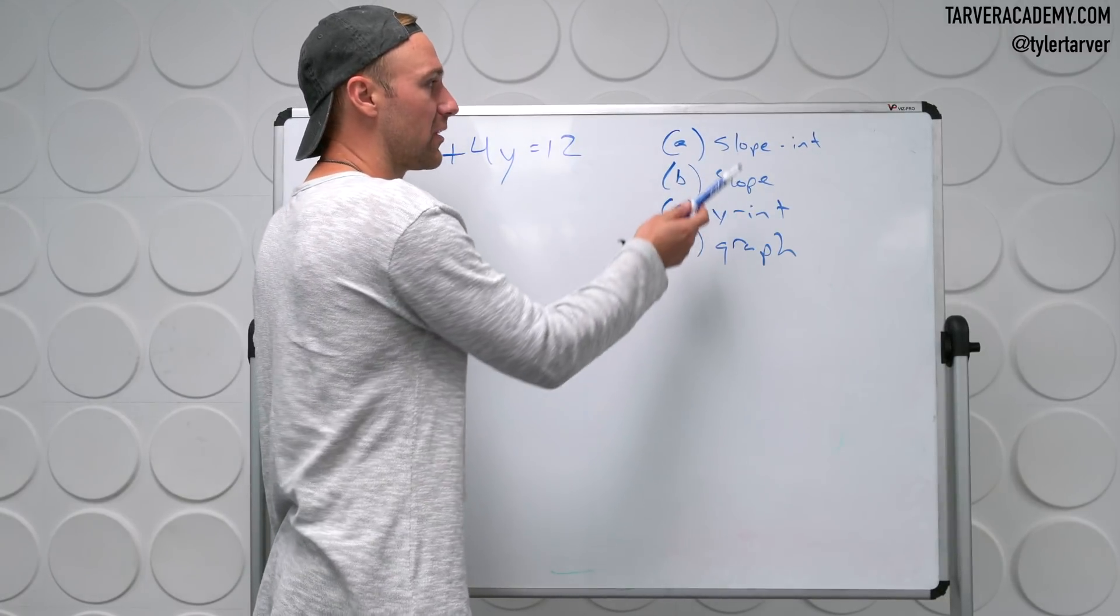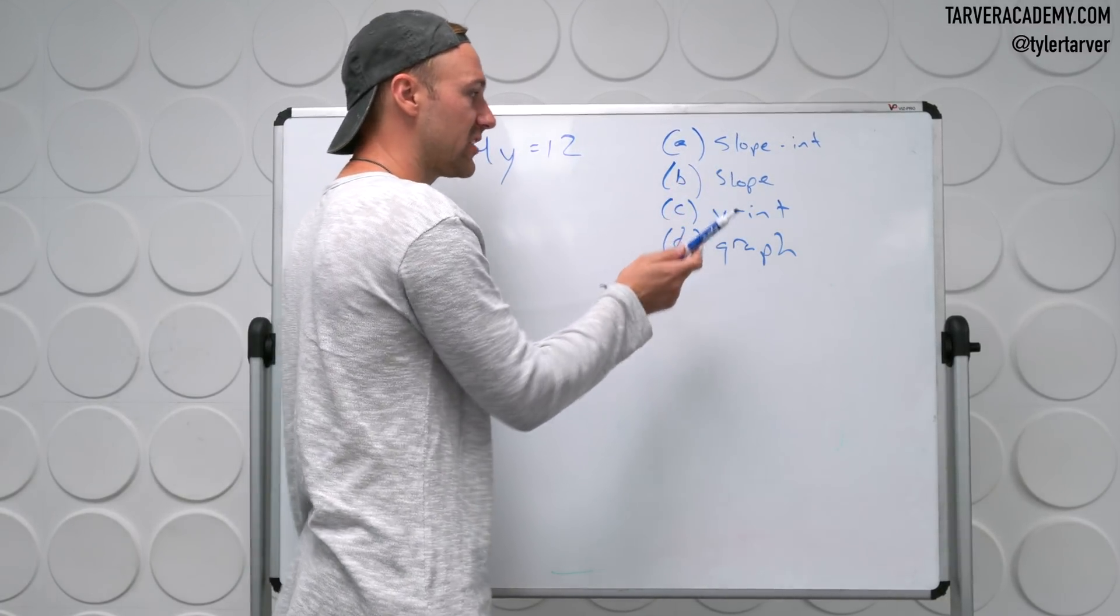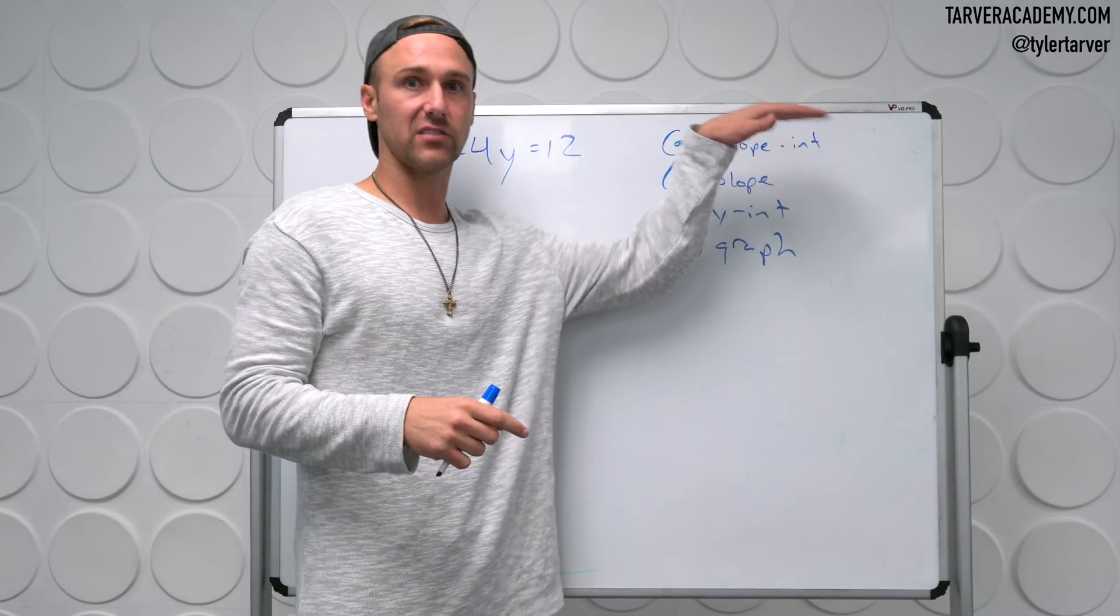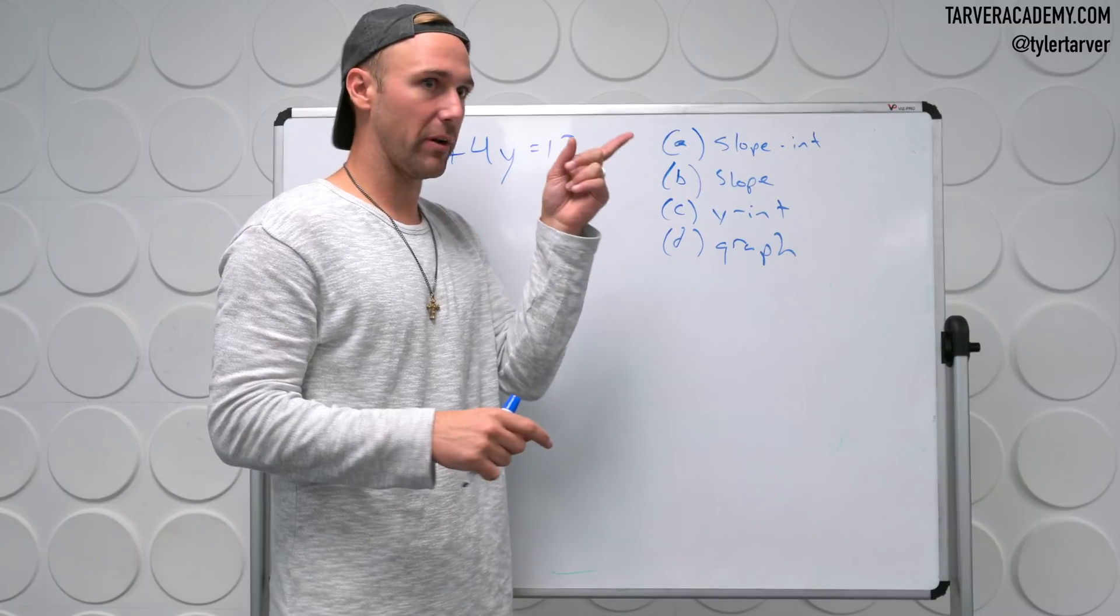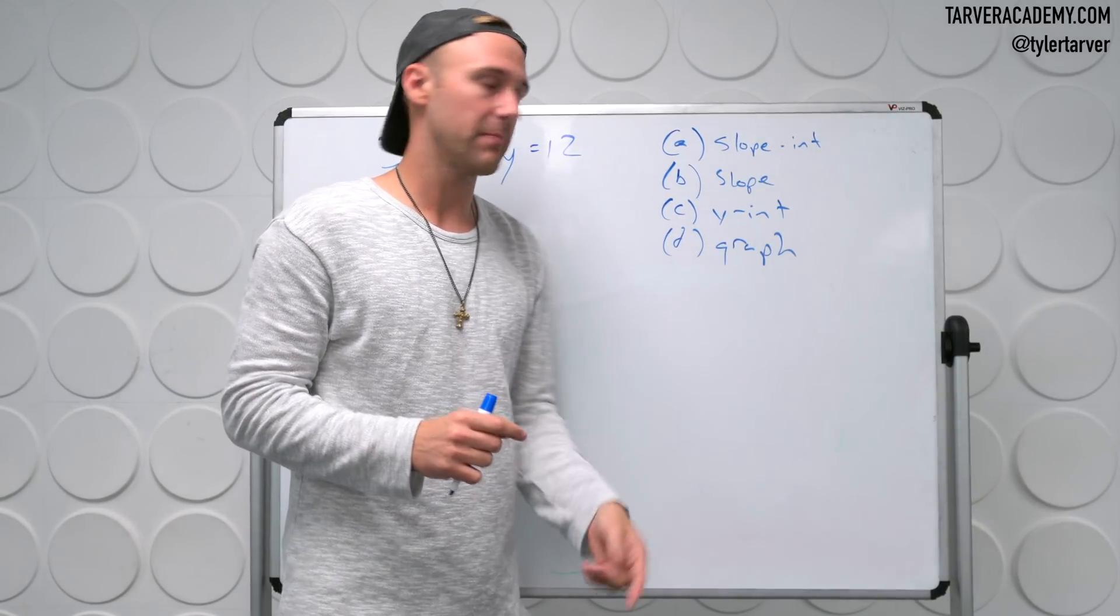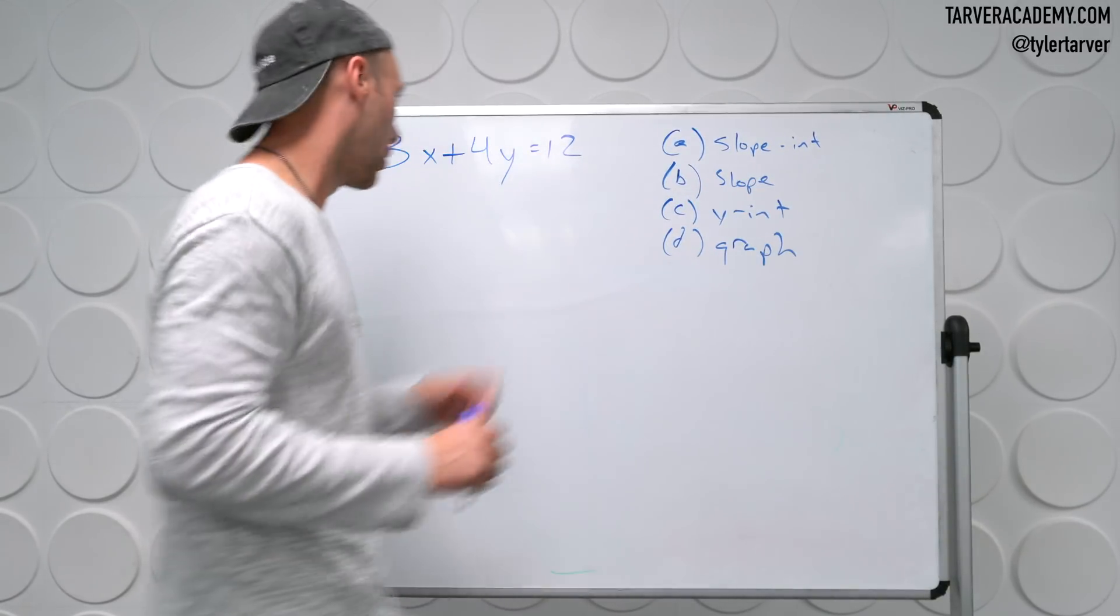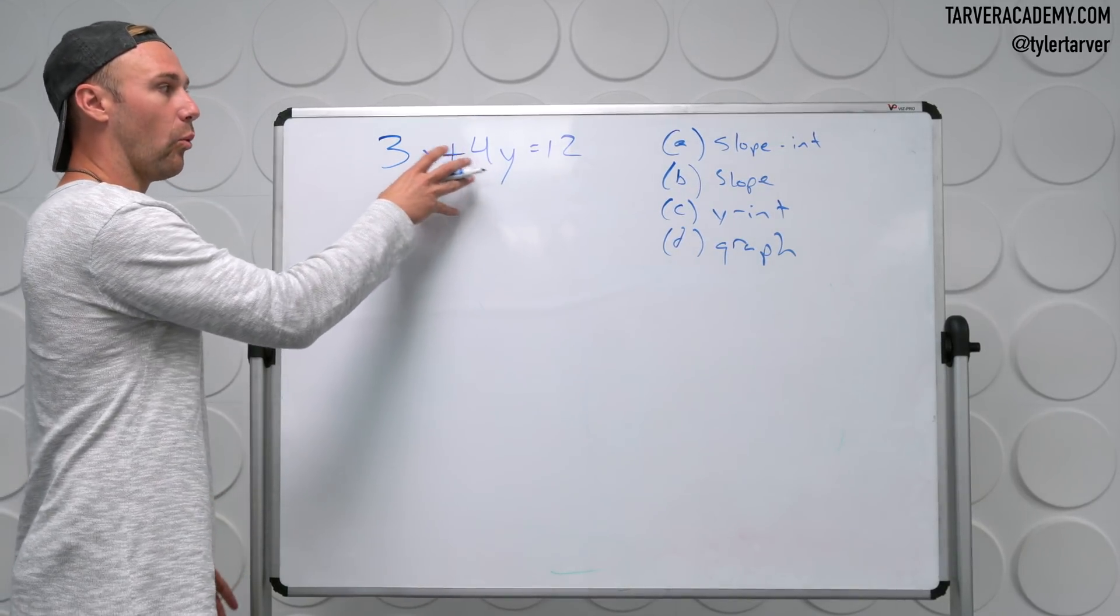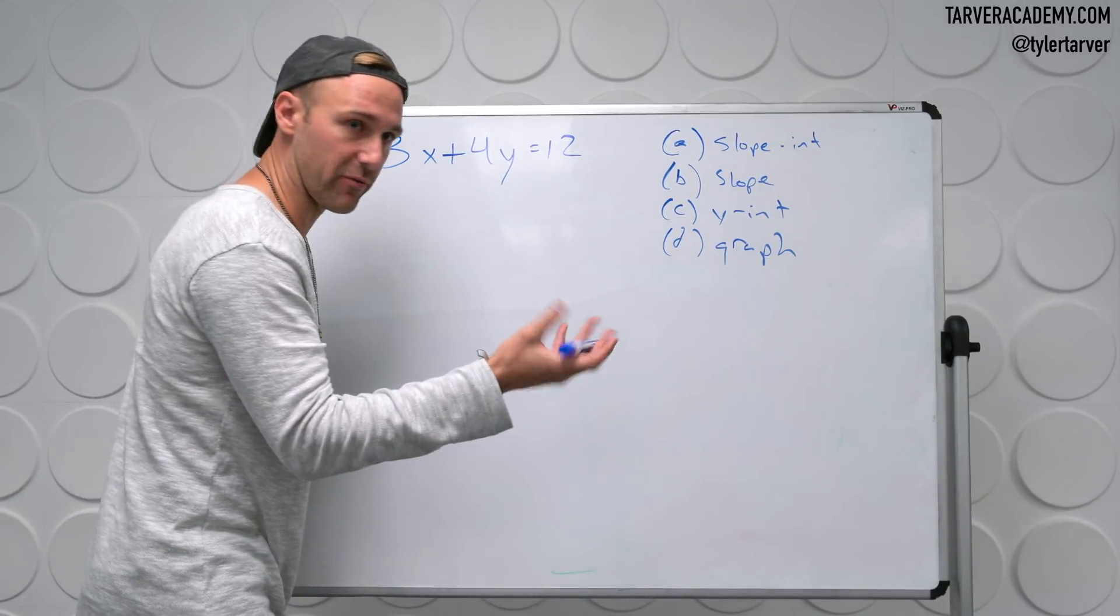So we want to find the slope intercept. We want to find the slope, the y intercept, and graph it. With the way this was laid out, once we find that slope intercept form, we'll just be able to point and be like that's slope, that's y intercept. And then we can graph it. Cool. So let's start it off. First thing we need to do is know what is slope intercept form.